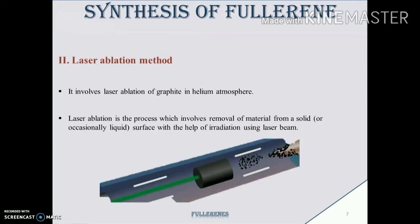The second method is laser ablation. In this method, a laser beam is used as the primary excitation source for the vaporization of the metal precursor from the surface. This excitation generates clusters directly from the solid sample. As seen in the figure, a high energy pulse laser beam hits the target — the substance on which the laser beam is made incident.